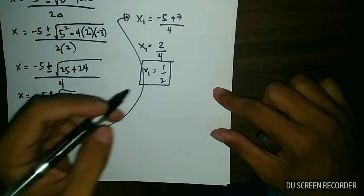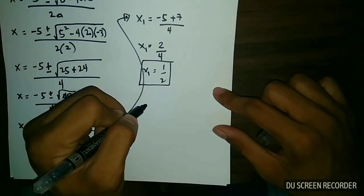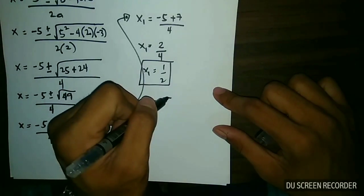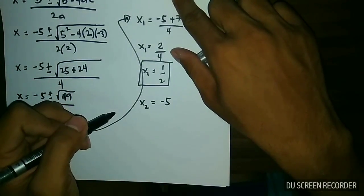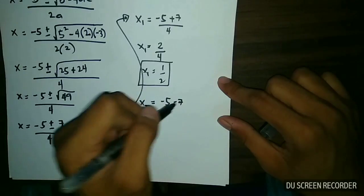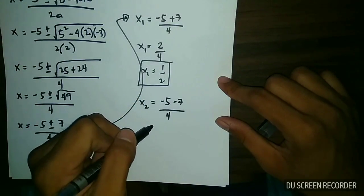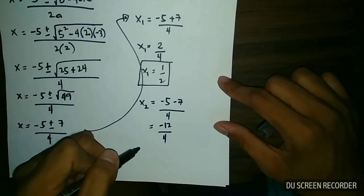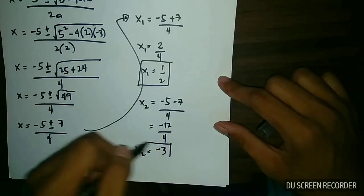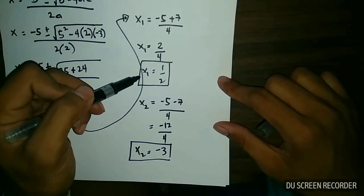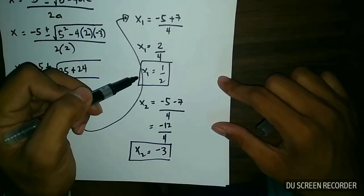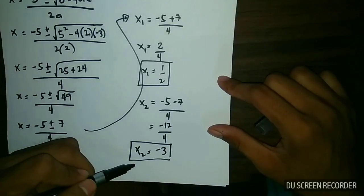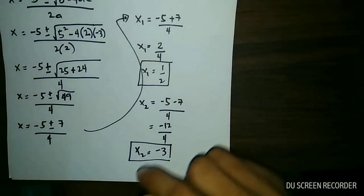For the second value of x, x sub 2, we use negative 7: x sub 2 is equal to negative 5 minus 7, all over 4, which gives us negative 12 over 4. Therefore x sub 2 is equal to negative 3. So the two values of x are one half and negative 3.